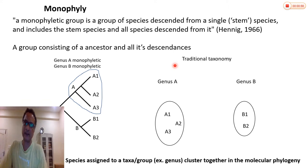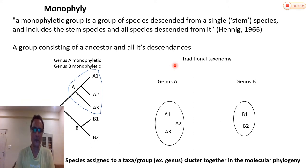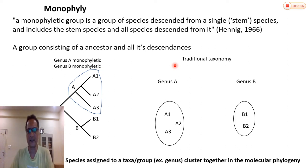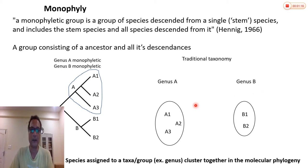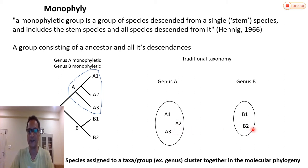Let us start with the term monophyly. To understand this term, let's come up with a hypothetical example. Let's say there are two genera, genus A and genus B. Genus A has three species: A1, A2, and A3. Genus B has two species: B1 and B2.